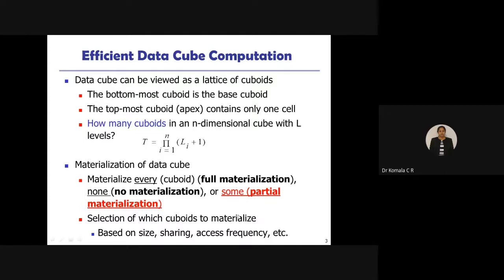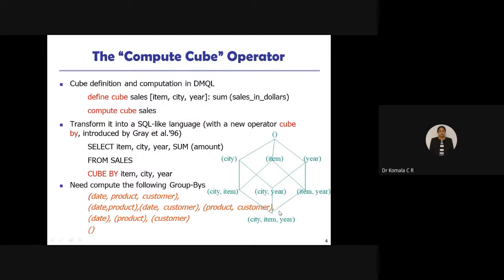The selection of which cuboids to materialize — whether full, partial, or none — is decided based on the size of the cuboid, whether they are sharing data, and the access frequency. For example, for a product like a television, you check production across different regions to evaluate materialization.